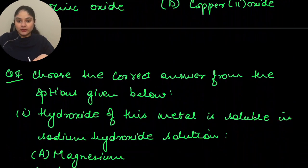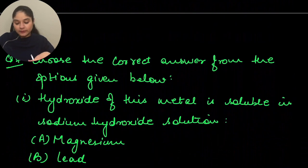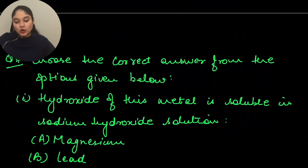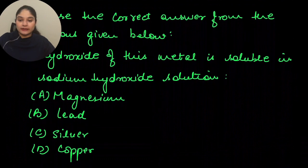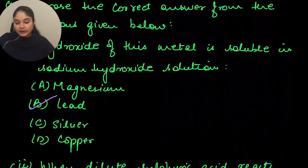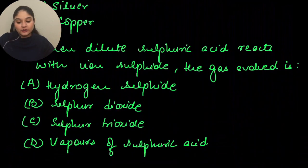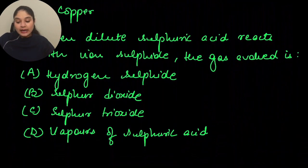Question seven: the hydroxide of which metal is soluble in sodium hydroxide solution? The answer is lead. Second: when dilute sulfuric acid reacts with iron sulfide, the gas evolved is hydrogen sulfide. Remember, when any sulfide reacts with an acid, you get hydrogen sulfide.